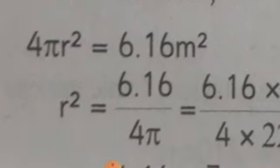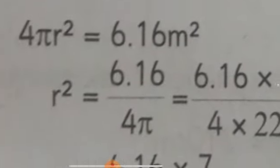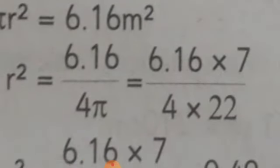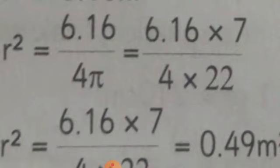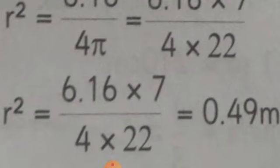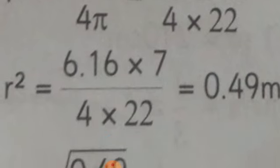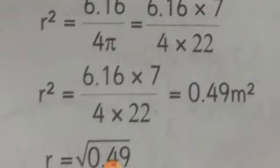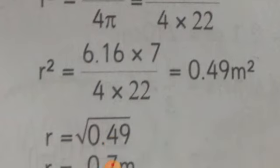In the next step, we have 4π which is 4 times 22/7. We put 6.16 times 7 divided by 4 times 22. When we solve this, the value is 0.49. We need to find r², so r squared equals 0.49 meter squared. To find the radius, we take the square root.